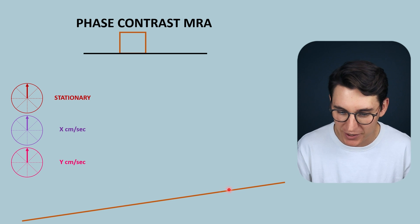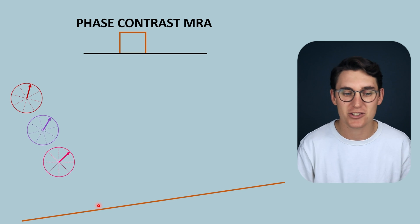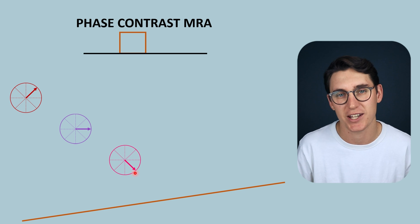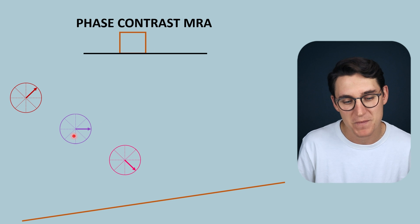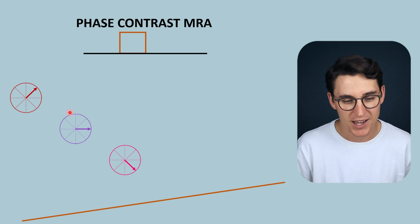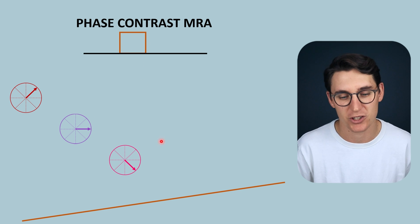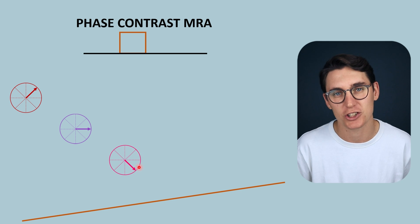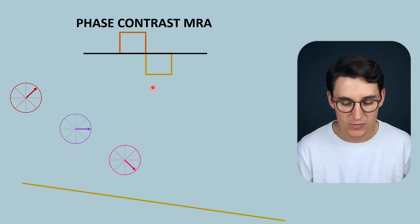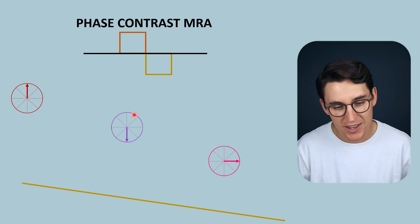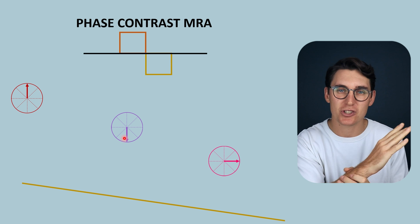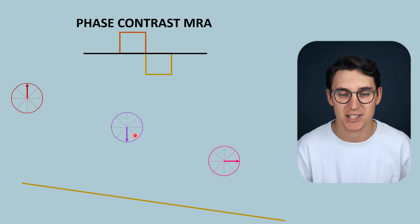Our moving spin now gains double the amount of phase compared to our first example. This one unit of phase change is much larger, so when we reverse the gradient, this one unit becomes three units of phase change in the opposite direction. The phase change is much more drastic because of this steeper gradient — the velocities haven't changed, only the steepness and strength of the gradient we're applying across the axis we're interested in.